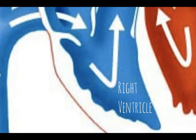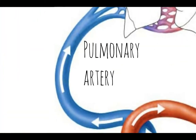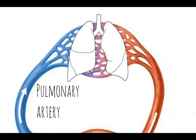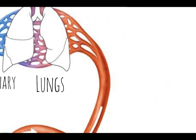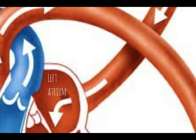It then leaves the heart in the pulmonary artery and returns to the lungs. Once in the lungs, gaseous exchange takes place — carbon dioxide is deposited and oxygen is taken into the bloodstream. Oxygenated blood then leaves the lungs and returns back to the heart in the pulmonary vein, entering the heart into the left atrium.